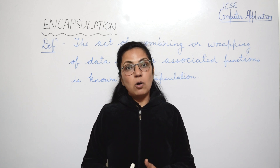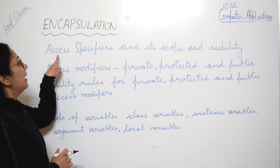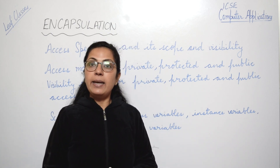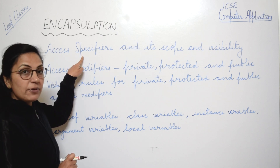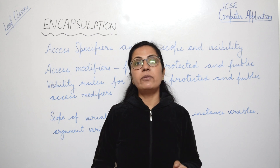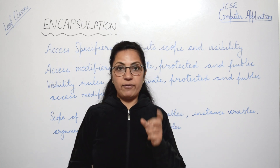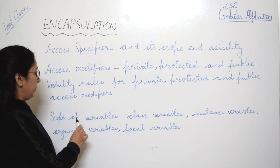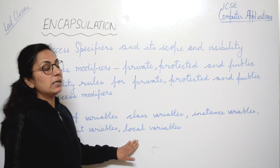Before we proceed further, let me tell you what all is there in your syllabus for this topic. If you check the syllabus, the main heading is 'Access Specifiers and its Scope and Visibility.' This is the main point of the encapsulation chapter. Under this, what you have to cover is access modifiers: private, protected, and public. Access specifier and access modifier represent the same thing — access modifier is the newer term. In exams it can be asked as either; they represent the same thing in Java. Then you have visibility rules and scope of variables: class variables, instance variables, argument variables, and local variables.